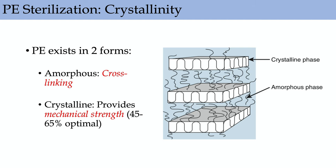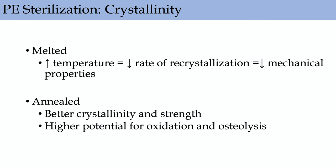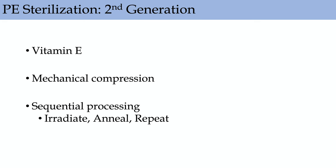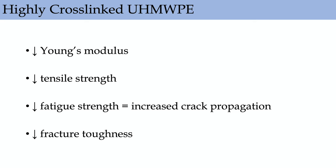Crystallinity: polyethylene exists in amorphous form — where cross-linking happens — and crystalline form, which provides mechanical strength. Melting increases temperature and decreases recrystallization, thus decreasing mechanical properties. Annealed polyethylene has better crystallinity and strength, but higher potential for oxidation and osteolysis due to more free radicals. Ways to quench free radicals: Vitamin E polyethylene, sequential processing (irradiate, anneal, repeat), and mechanical compression. Highly cross-linked poly has decreased Young's modulus, decreased tensile strength, decreased fatigue strength, and decreased fracture toughness, but very low wear rates.